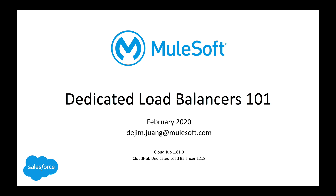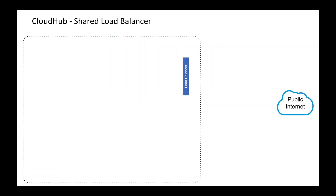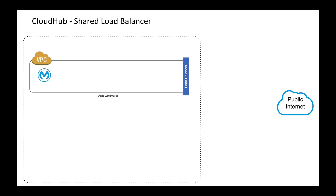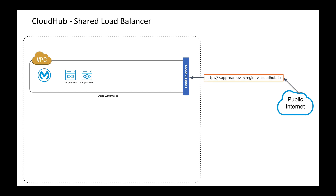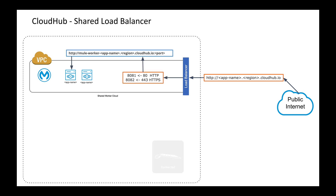Let's give you a little background on load balancers within CloudHub first before we get into the tooling. When you deploy your application into the shared worker cloud, we have the concept of a shared load balancer. This is one that's shared across all customers deployed into a shared worker cloud — it's a cloud where they haven't set up their own VPC. When they deploy the application and someone makes a request to appname.region.cloudhub.io, the shared load balancer will take that request and route it accordingly based on the app name as well as the ports.